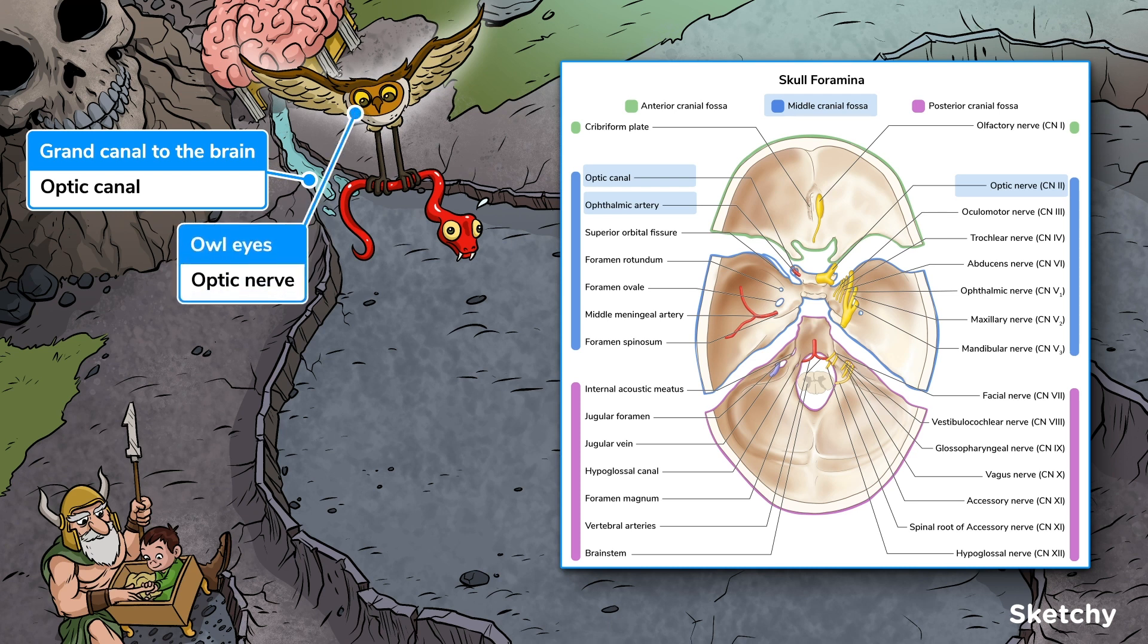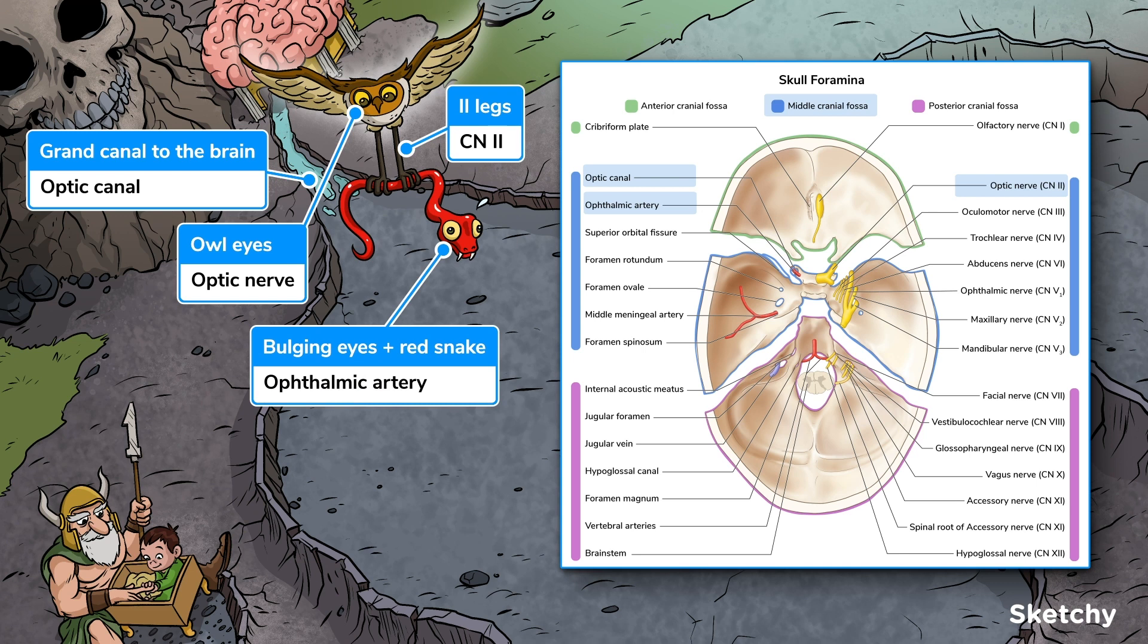The owl, with its big eyes, will remind you of the optic nerve. See how its legs look like a Roman numeral 2? That's because the optic nerve is cranial nerve 2. And finally, the owl is holding a red snake with bulging eyes to remind you that the optic nerve travels with the ophthalmic artery.